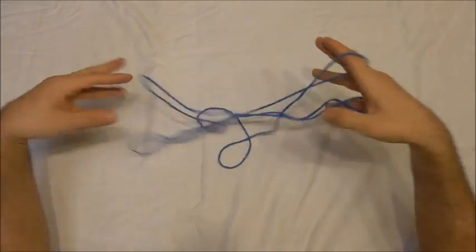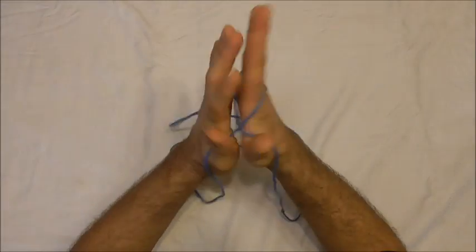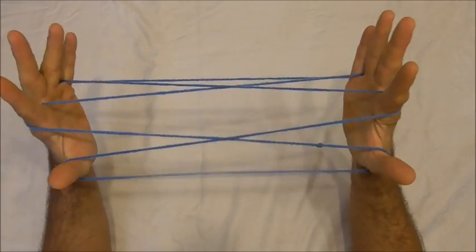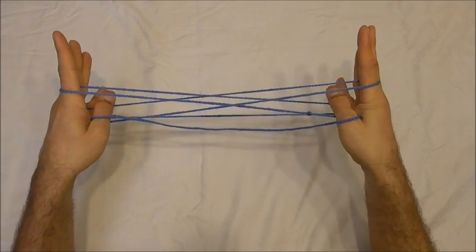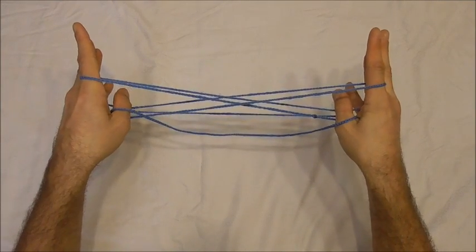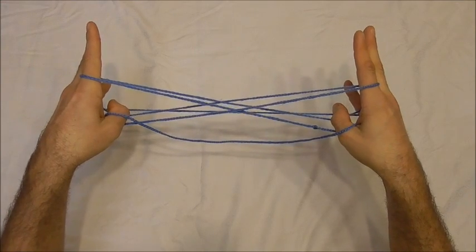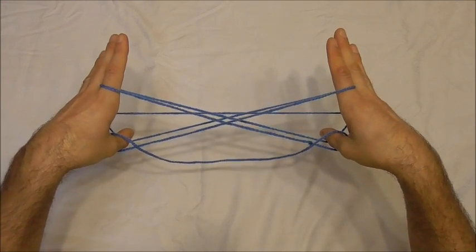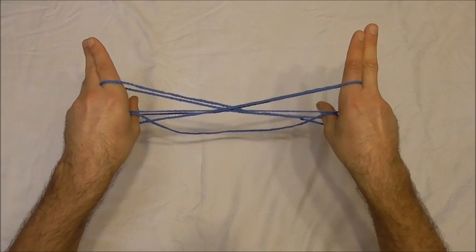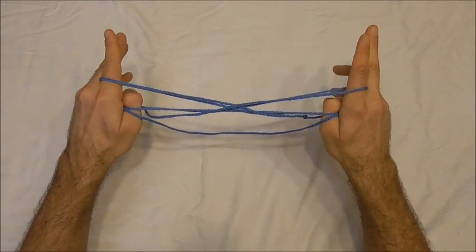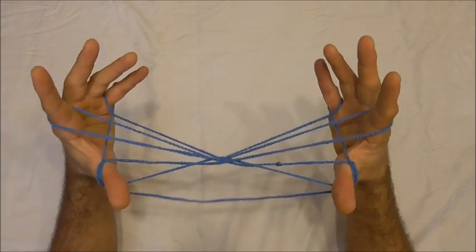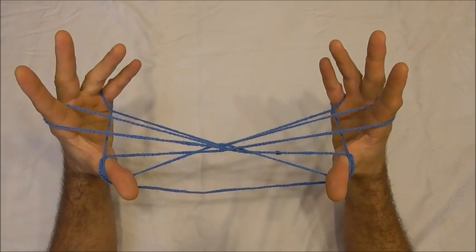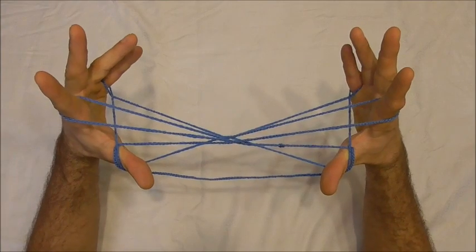So I'll show that in a different angle. I want to go underneath the pointer finger loops, over the near little finger string, push that down, go underneath the far little finger string and pull that string underneath both of those pointer finger loops. So it should end up like this.